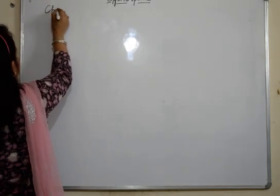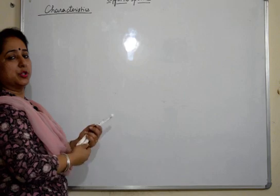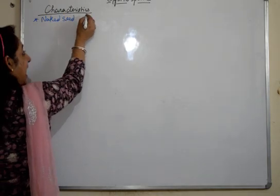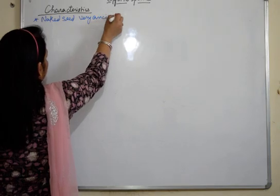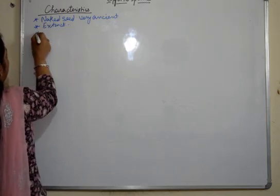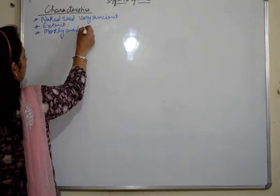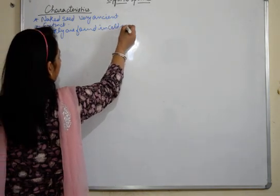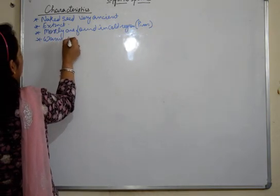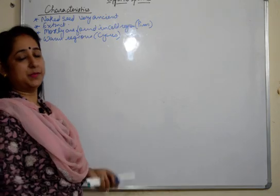General characteristics of gymnosperms: we all know they are the plants with naked seeds. They are very ancient and most of them are extinct. The ones which are present are mostly found in cold regions — example, pinus — and a few are found in warm regions — example, cycas — which we will be discussing. Both of these are in the syllabus for grade 11th.